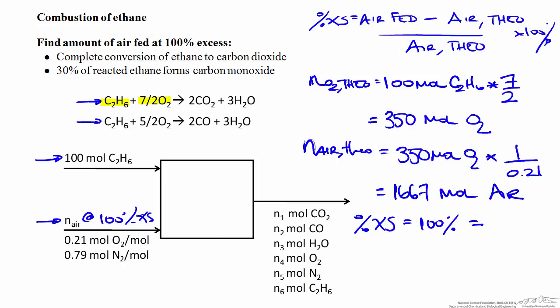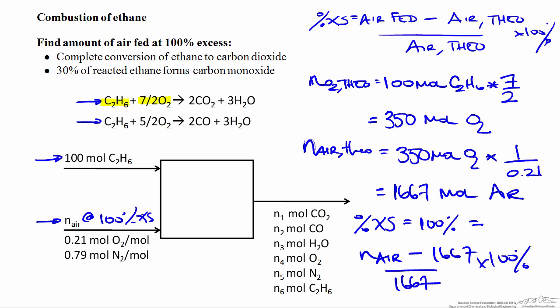With air supplied at 100% excess and the theoretical requirement of 1,667 moles known, we can find the actual moles of air fed. Plugging into the percent excess air equation: 100% equals the air fed minus 1,667 divided by 1,667, times 100%. Solving this, the air actually fed to the reactor is 3,333 moles of air. This calculation assumes complete conversion of ethane to carbon dioxide.